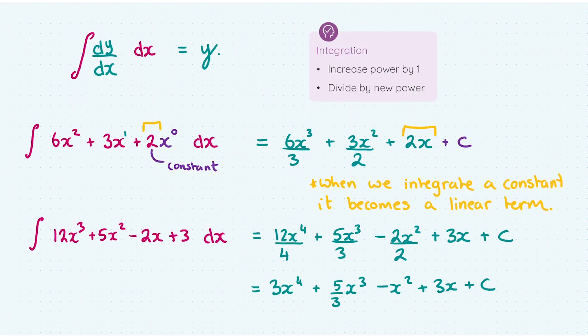Just to recap, folks, the three main things here are integration is the opposite of differentiation. Secondly, your integration rule, increase the power by one and divide by the new power. And finally, when you integrate a constant, say two, you're going to get 2x. If you integrate a constant five, you're going to get 5x. So that's just a shortcut. And we've seen it there in our first example with the x⁰, why that works.